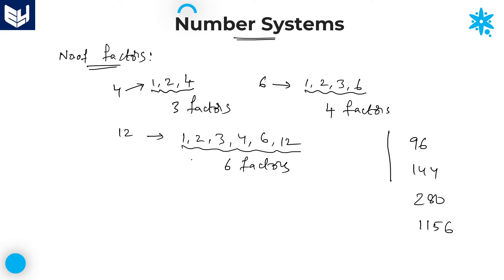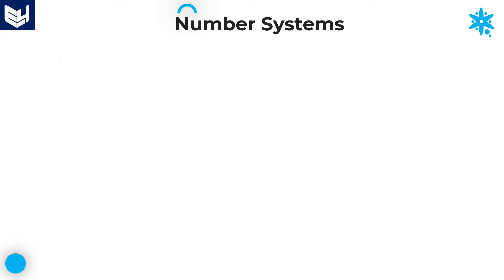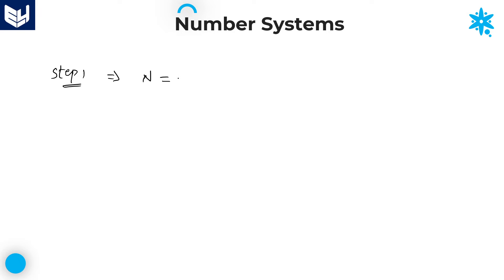In order to avoid that particular difficulty, we have a separate concept for finding the number of factors. It is a very simple task. Once you understand the concept, the calculation of number of factors is very simple. The first and foremost step is: whatever number is given, write down that number as a product of prime factors.